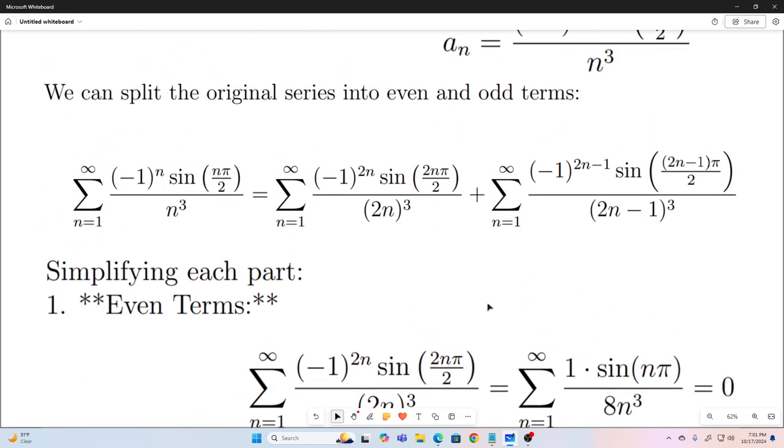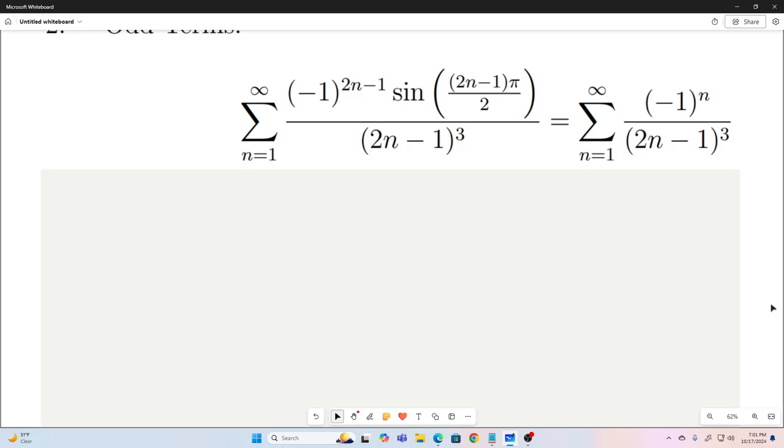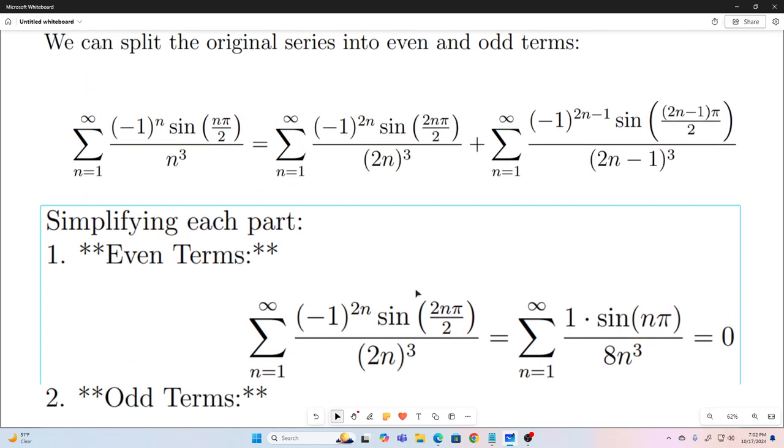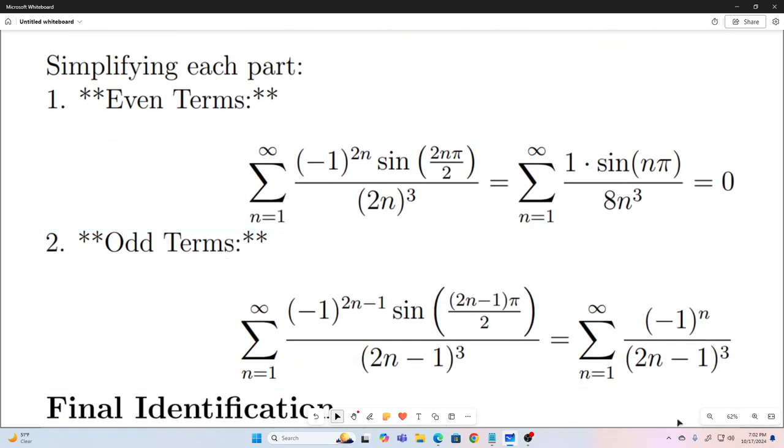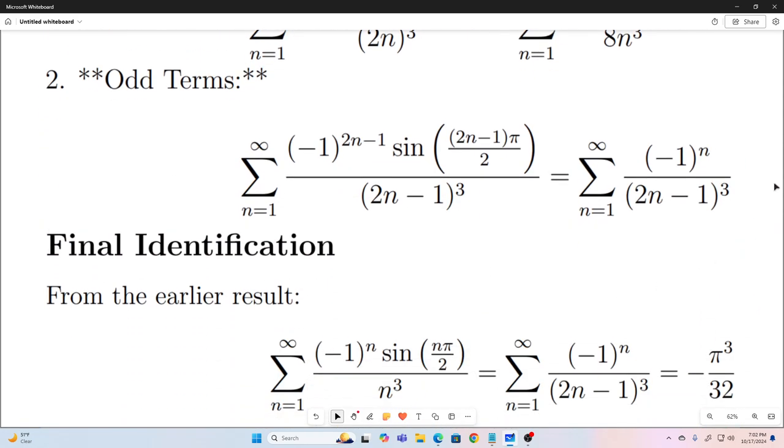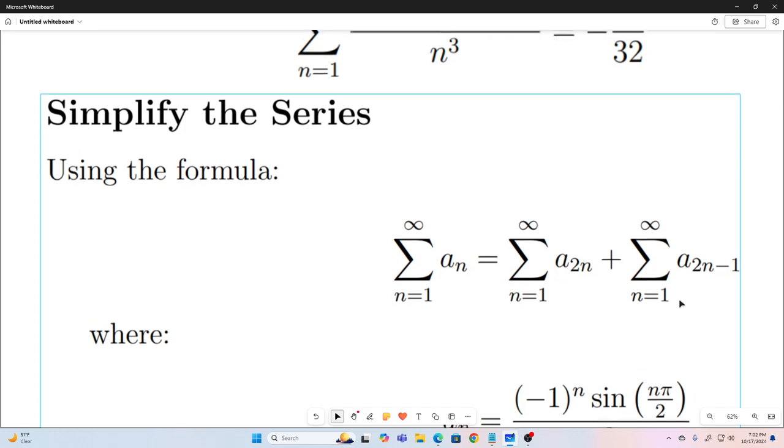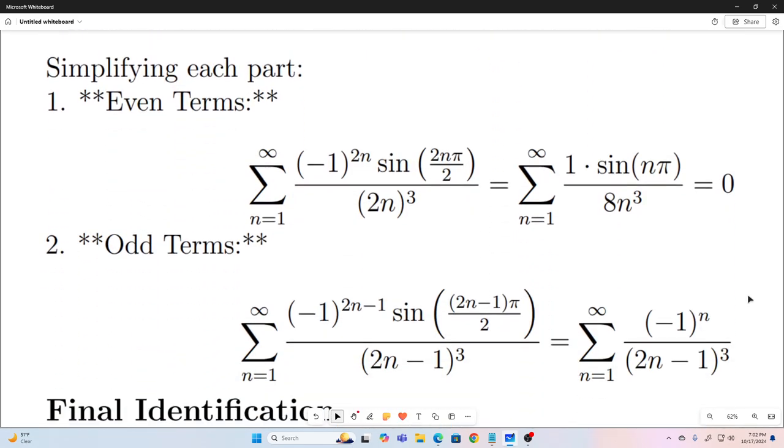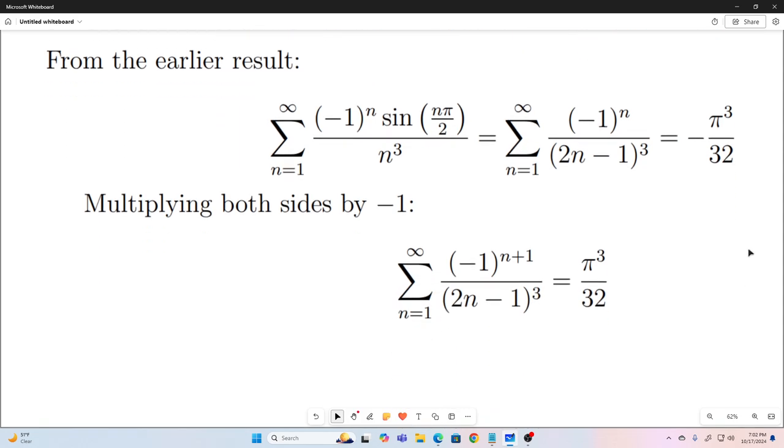So, we're going to substitute those into this. And what we get is this. So, we know that this is now equal to simply this. Because if we substitute this, which is 0, into this, and this, which is this right here, we just get that this is equal to this. Which we also know previously is equal to negative pi cubed over 32. So, this is what we're left with.